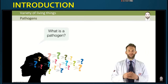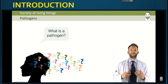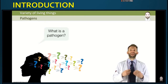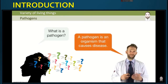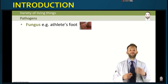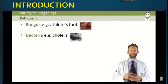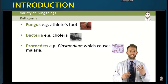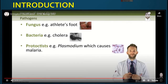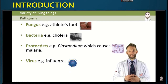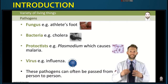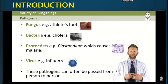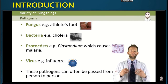Another important topic is pathogens. A pathogen is any organism that causes a disease. It could be a fungus, like athlete's foot; a bacteria, like cholera; a protist, like plasmodium, which causes malaria; or a virus, such as influenza. Because of their nature as living organisms, pathogens can be passed from person to person or organism to organism — these are what usually cause infectious disease.